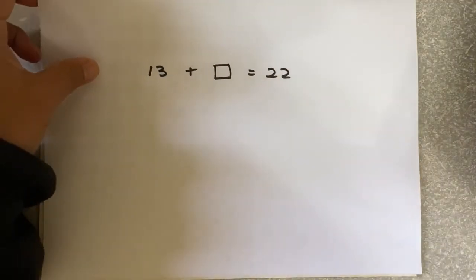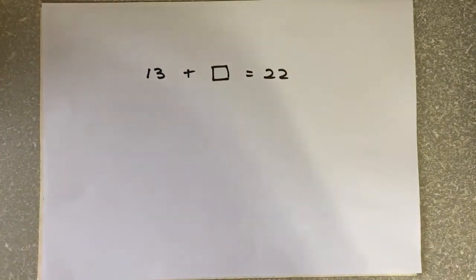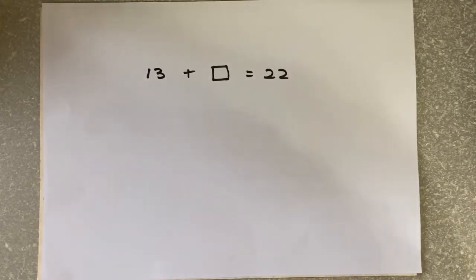We shall look at some examples. In primary school, you learned how to solve this equation: 13 plus a box equals 22.